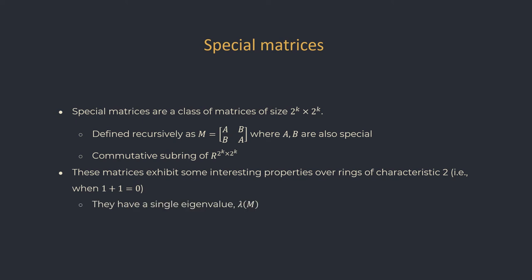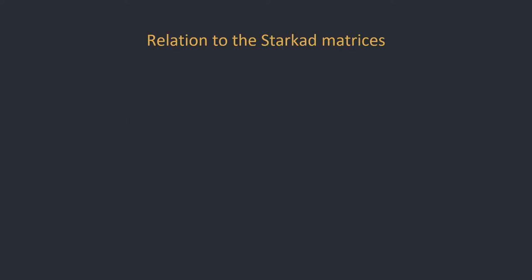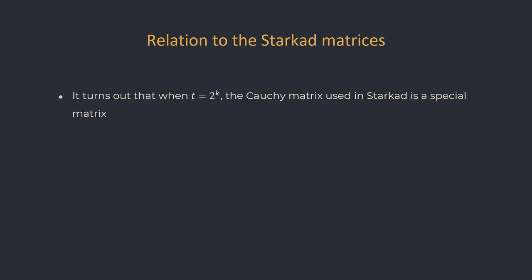The first property we discuss is that every special matrix has a single eigenvalue, which we denote lambda. The eigenvalue is additive, and the determinant is also additive, which is pretty unusual. Furthermore, M squared is a scalar matrix, and the scalar is the eigenvalue of M squared. As it turns out, when T is a power of 2, the Starkad matrix is a special matrix — though this is not true in general for all Cauchy matrices.